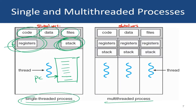As opposed to this, in a multi-threaded process, the code section and the data section of the process are shared across all the threads. Also, the system resources which the process is using — for example, the open files in the system — are also common and shared across all the threads. However, every thread has its own copy of register file and stack. So in this picture, we have three threads: T1, T2, and T3. Each of these threads has their own copy of register file and stack.